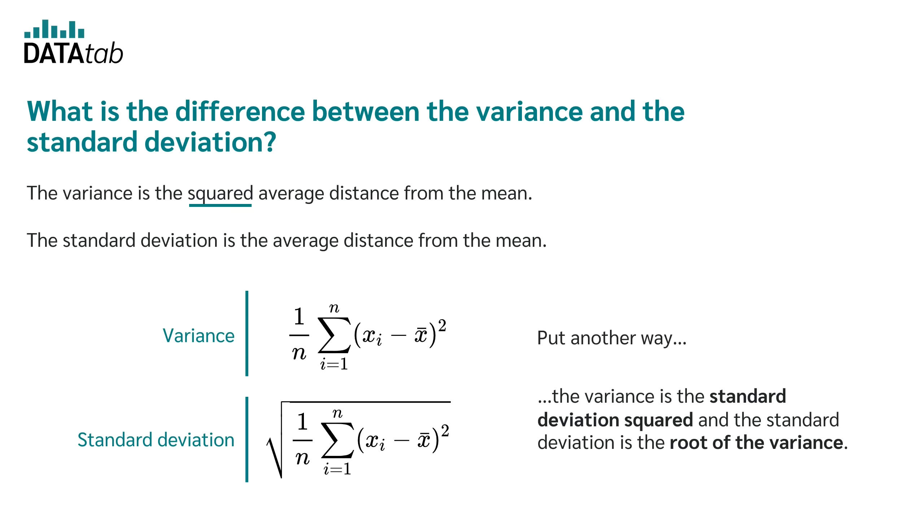By taking the root of the standard deviation, it is easier to interpret the standard deviation than the variance. By taking the root, the standard deviation always has the same unit as the original data. In our example, it is centimeters. The variance is in centimeters squared.